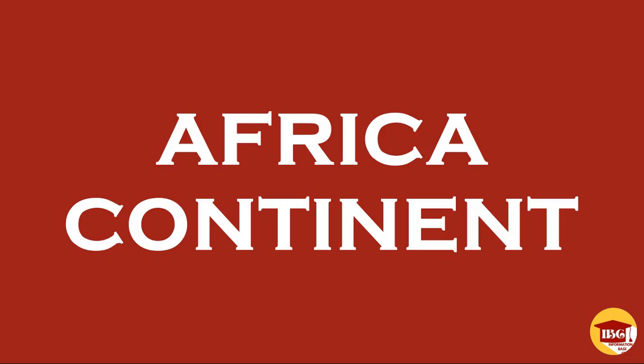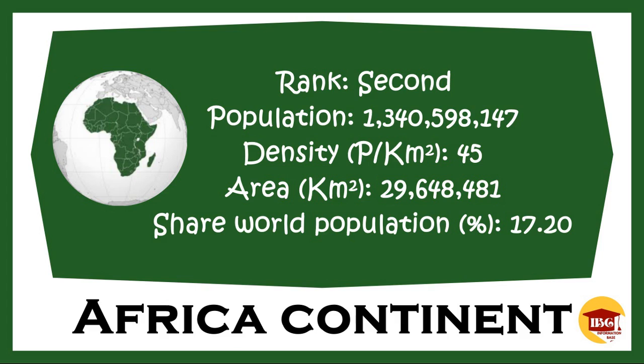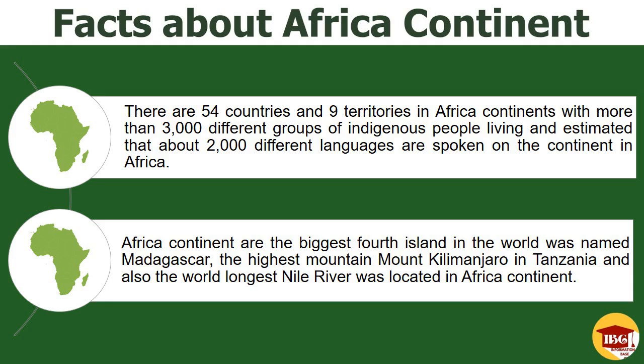First of all, the continent of Africa was the second biggest continent in the world. The total area of Africa continent was 29,648,481 km² with 45 people per square kilometer density. The population around the continent of Africa was around 1,340,598,147 and shares the world population about 17.2%. There are 54 countries and 9 territories in Africa with more than 3,000 different groups of indigenous people, and it is estimated that about 2,000 different languages are spoken on the continent.